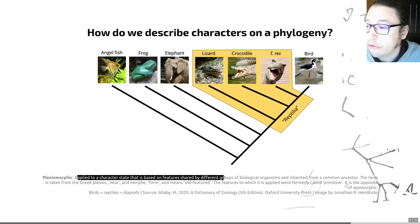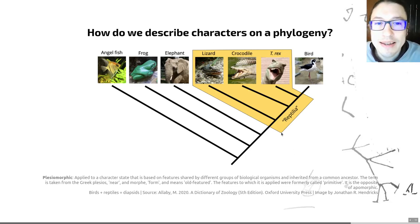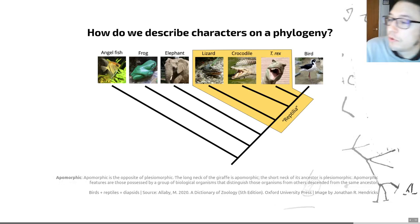A plesiomorphic character is a name that's applied to a character state that is based on features shared by different groups of biological organisms and inherited from a common ancestor. So plesiomorphic to all of these organisms, the plesiomorphic state for this clade the diapsids, probably let's go for bones again. Bones are plesiomorphic, so we know the elephant has bones, so bones are plesiomorphic to this diapsid clade. So this is what we used to call primitive condition. We no longer would use the word primitive, we tend to use the word plesiomorphic instead because it ties it into a particular evolutionary scenario.